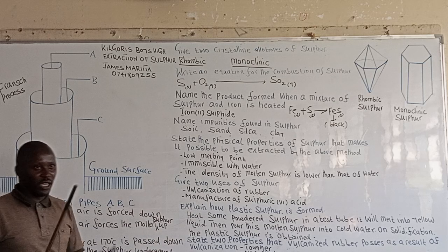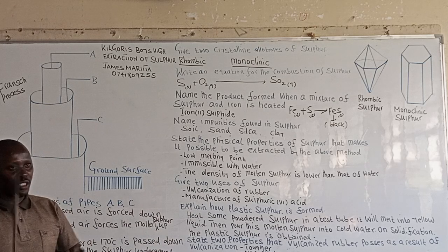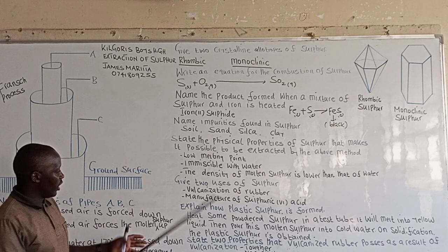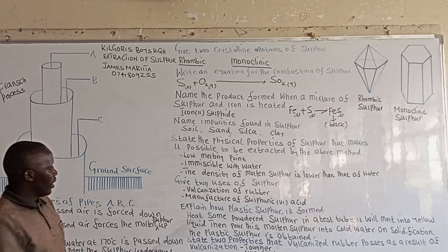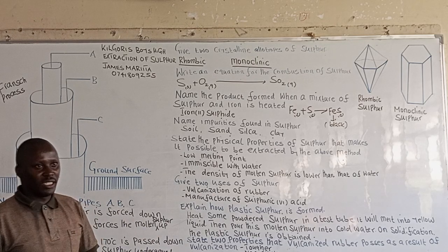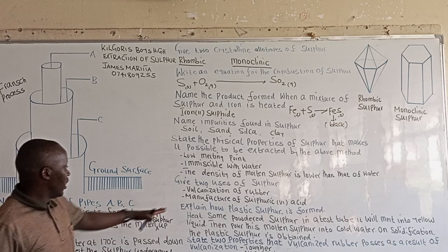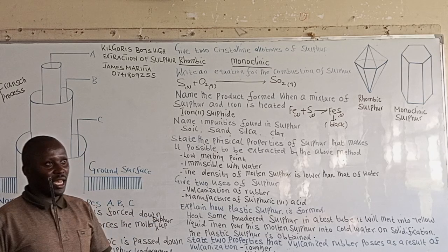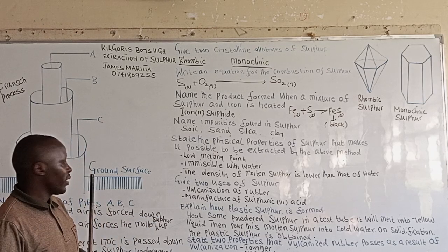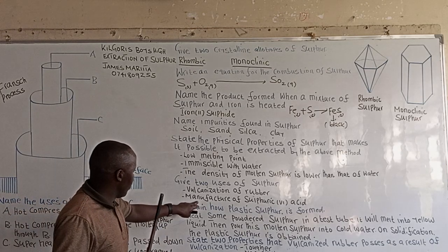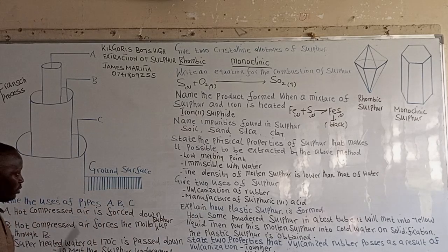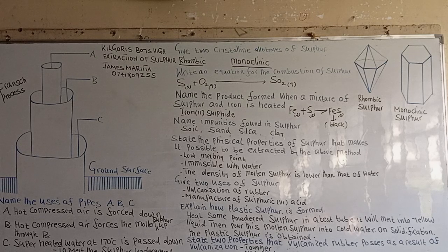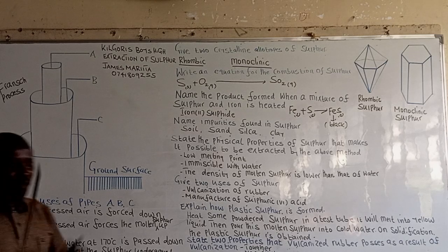There are two uses of sulfur. There are various uses of sulfur: it is used for the vulcanization of rubber and the manufacture of sulfuric acid by the contact process. It can also be used as a fumigating agent.